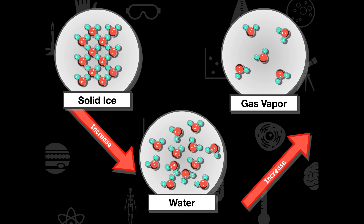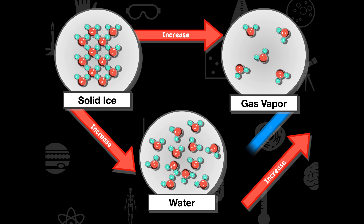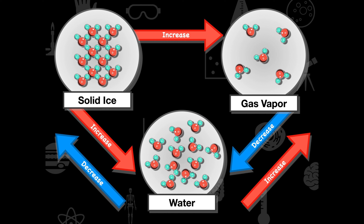If we increase that temperature again and vibrate those molecules even more, water turns into a gas or vapor. We can go from solid to liquid to gas, or directly from solid to gas. We can also decrease the vibration and energy and go back from gas to liquid or to a solid. This process is all about the arrangement of atoms, how much they're vibrating, and whether they exist as a solid, liquid, or gas.